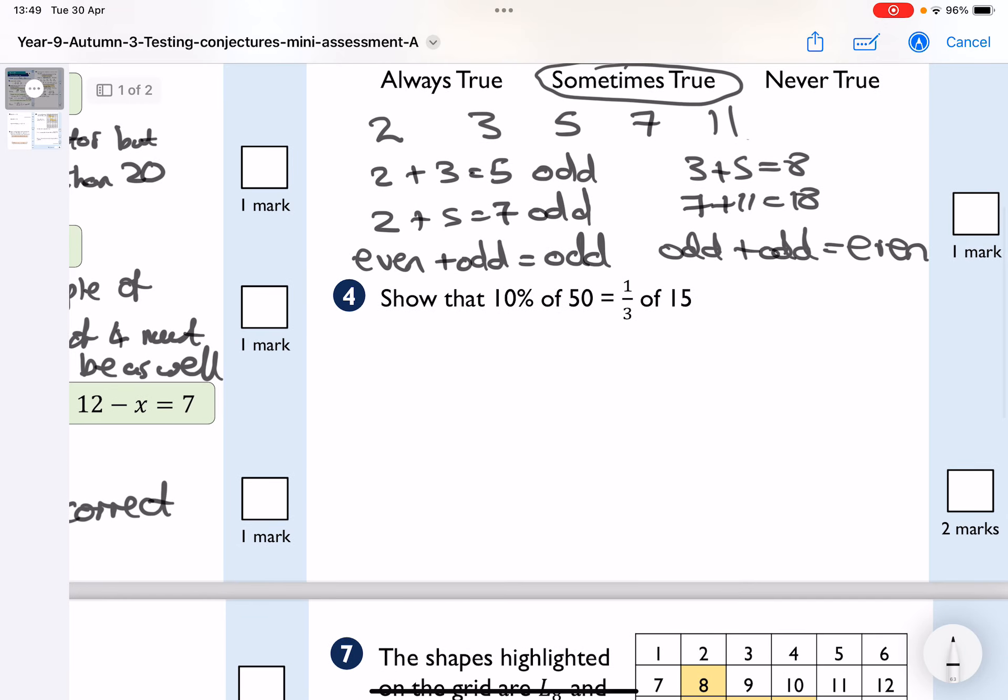Number four, show that 10% of 50 equals one third of 15. Right, well, let's have a look what 10% looks like. So, what I've got, 10% is actually 10 over 100 times by 50, which actually is 50 divided by 10. Okay, because this simplifies to one tenth. So, the answer to 50 divided by 10 is 5.